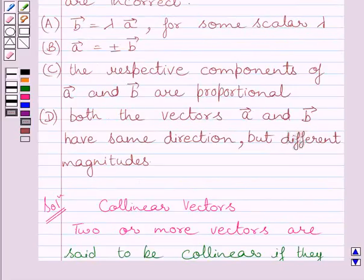Now, let us consider option D. Here, option D states that both collinear vectors, vector A and vector B have same direction but different magnitudes, which is not true always. So, this statement is incorrect.